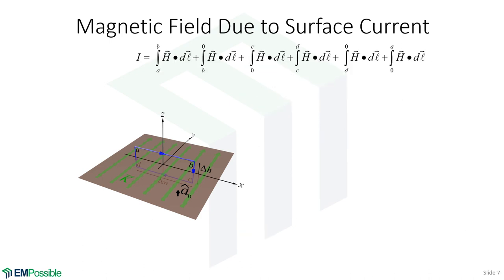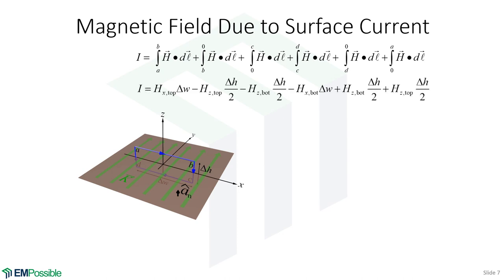Let's think about each of these integrals individually. We start at point A and integrate from A to B. We're going in the positive X direction, so we have a positive sign out front. Since we have a dot product H dot dL, and dL is in the X direction, we're listening to the X component of the magnetic field on the top of this surface current element. The length of this is δW, so this first integral from A to B is just H_X on the top times δW.